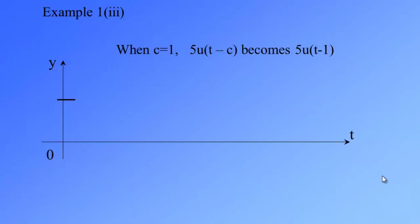Third example. When c equal to 1, what happens to 5 times u(t-c)? It becomes 5 times u(t-1).